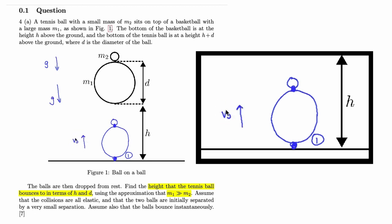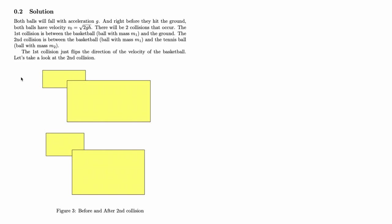The second collision is where we need a bit of extra work to figure out how much momentum is transferred from the basketball to the tennis ball. Now, as for most collisions, we have a before and after diagram analyzing the collision.